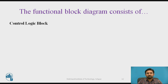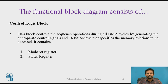The next functional block is the control logic block. This block controls the sequence of operations during all DMA cycles by generating the appropriate 16-bit control signals and 16-bit address that specifies the memory locations to be accessed. It contains two specific registers: the mode set register and the status register.